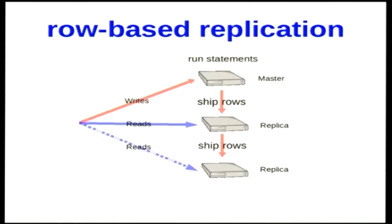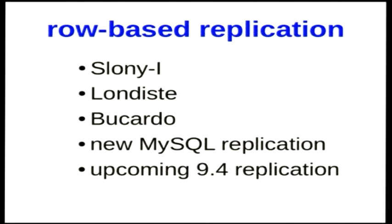Our second replication mechanism, which has been around in Postgres for a while, is row-based replication. With row-based replication, writes go to a single master, and then the new versions of the rows from the various tables get distributed to the replicas. This is better than statement-based replication because you eliminate inconsistencies around timing, random changes, and statements that fail on one server but not others. Systems for this in the Postgres world include Slony-1, Londiste, and Bucardo. We are returning to row-based replication with Postgres 9.4, which offers a new option for that.